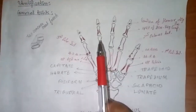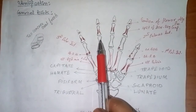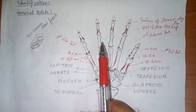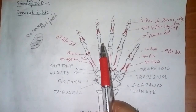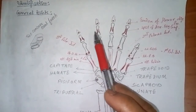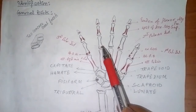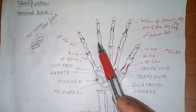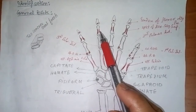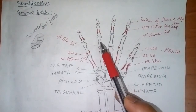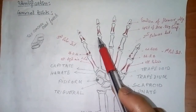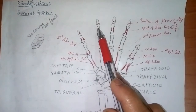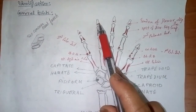For the shaft, the dorsal surface is convex from side to side and the palmar surface is gently concave. For the head, in the proximal and middle phalanges, the head has a pulley-shaped articular surface, because they are articulating with the next phalange.